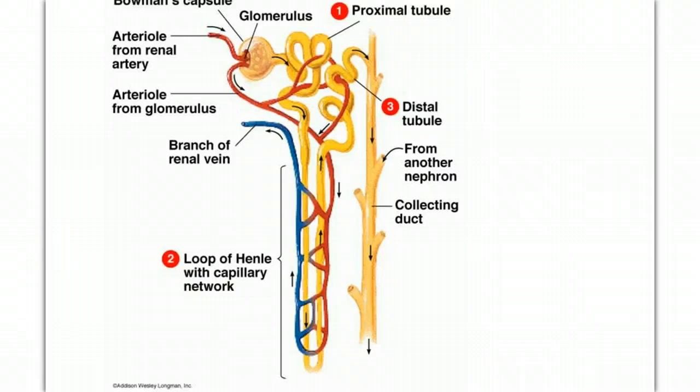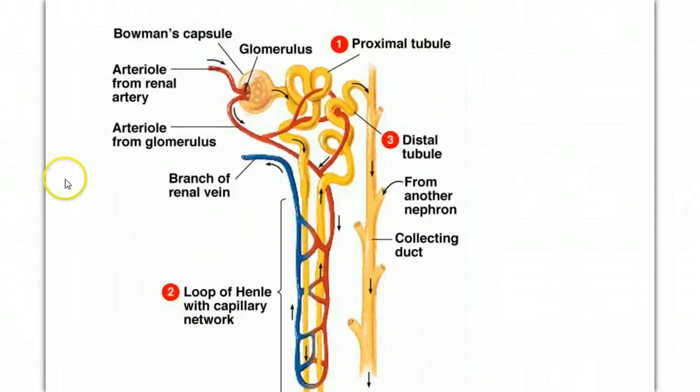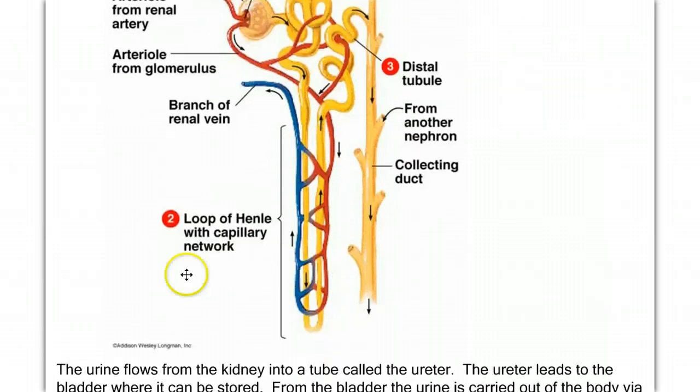The capillaries that are associated with the nephron are the glomerular capillaries inside the Bowman's capsule, the afferent arteriole leading in, the efferent arteriole leading out, and then we have this capillary bed that surrounds the loop of Henle called the vasa recta, and the capillaries also around the proximal and distal convoluted tubules will also be picking materials back up from the nephron during this system.